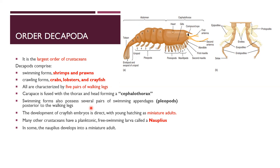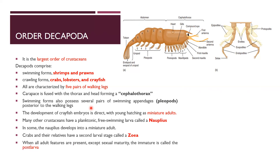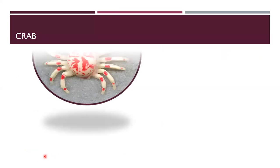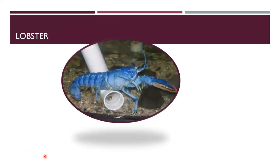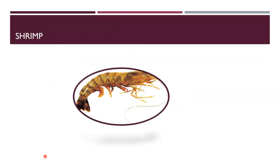Some crustaceans have a planktonic free-swimming larva called nauplius. In crabs and their relatives there is a second larval stage called zoea. When all adult features are present except sexual maturity, the immature is called the post-larva. Crayfish has direct development to miniature adult; crabs have the zoea larval stage and then post-larva.